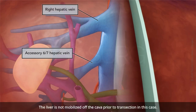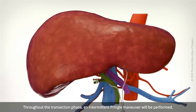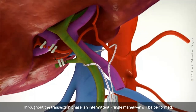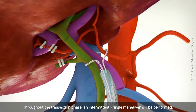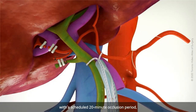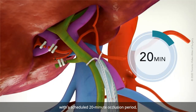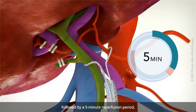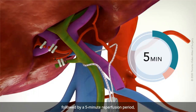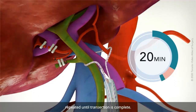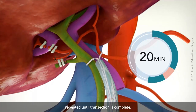The liver is not mobilized off the cava prior to transection in this case. Throughout the transection phase, an intermittent Pringle maneuver is performed, with a scheduled 20-minute occlusion period followed by a 5-minute reperfusion period, repeated until transection is complete.